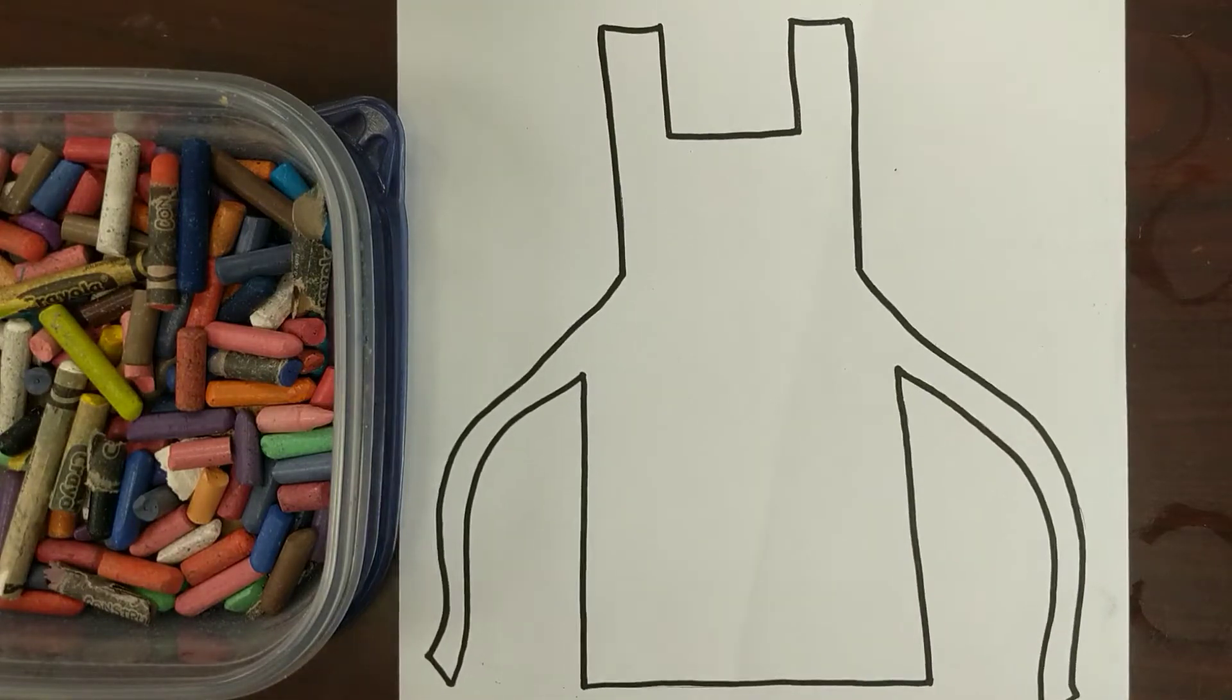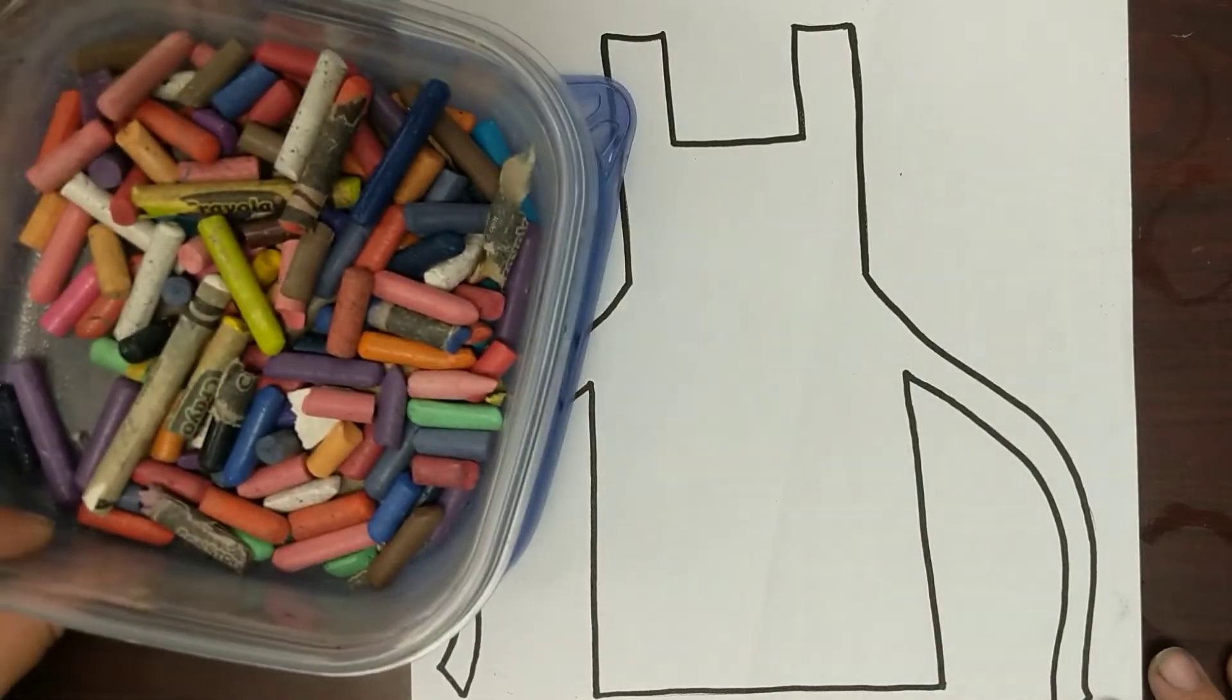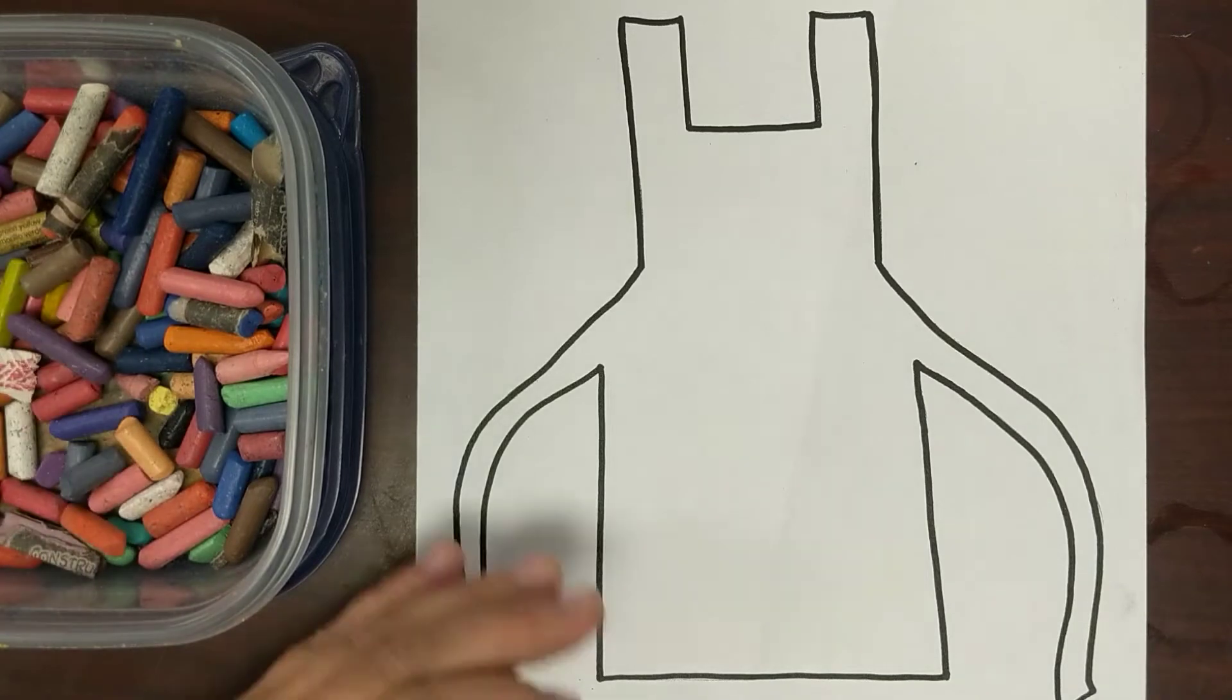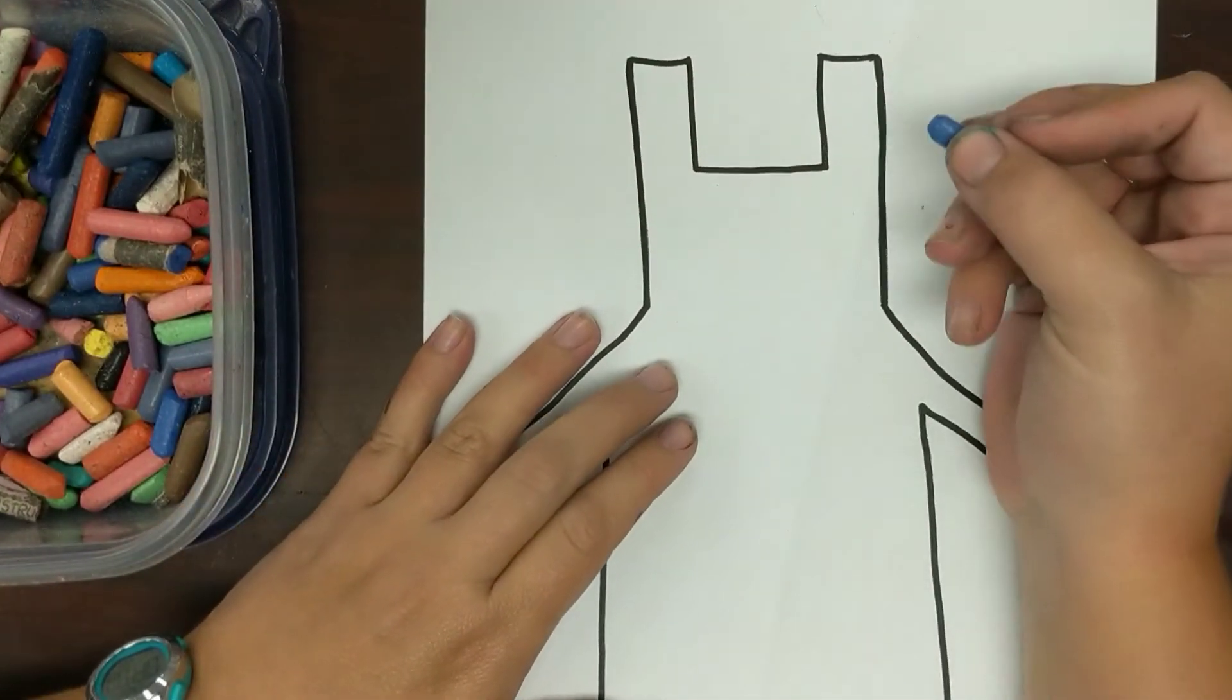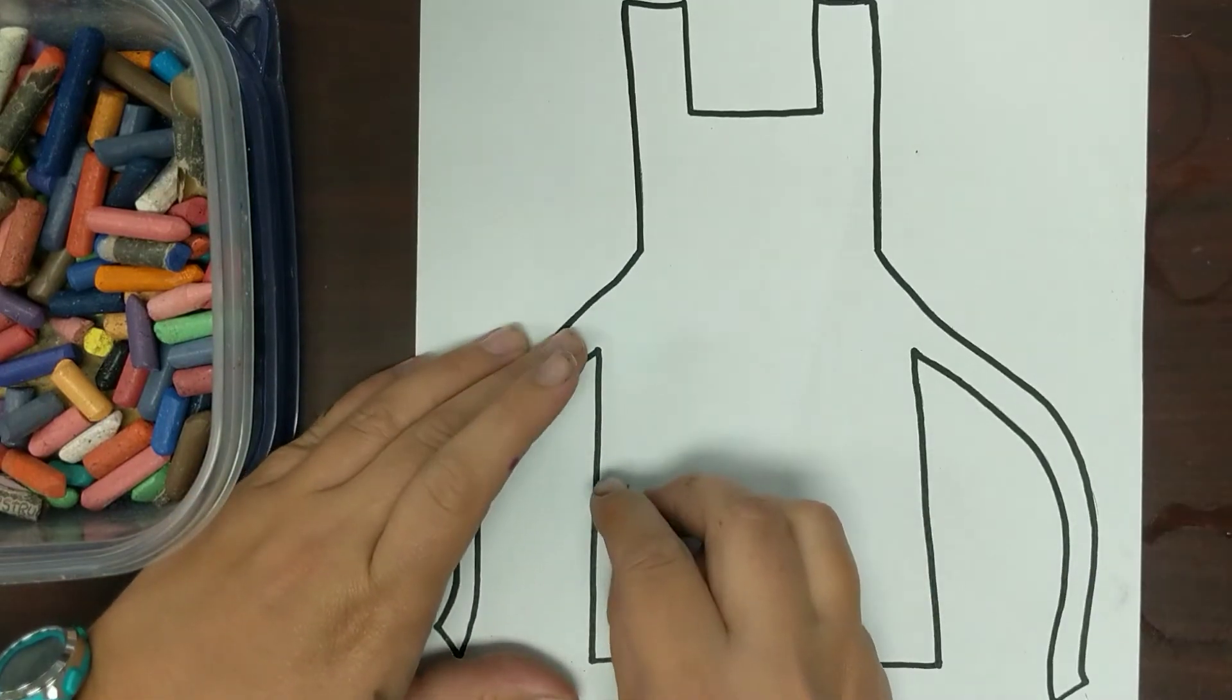We're going to experiment with some different types of lines. You guys are going to be using the crayons today. So different types of lines, there's all kinds of lines. I need you to put at least four different kinds of lines on your apron. So you could do...